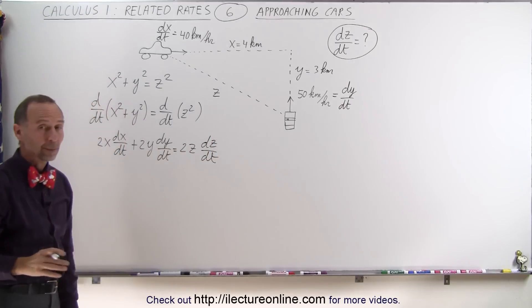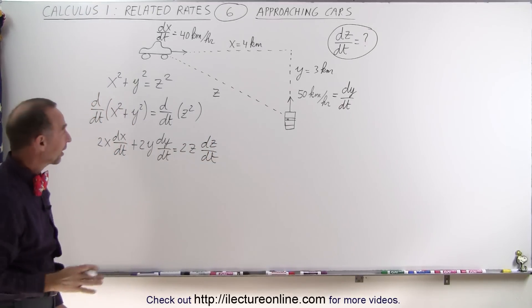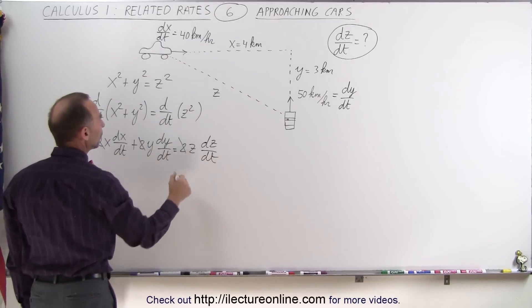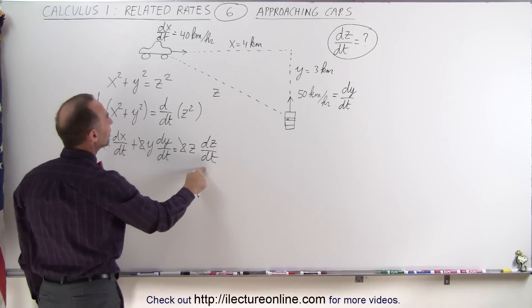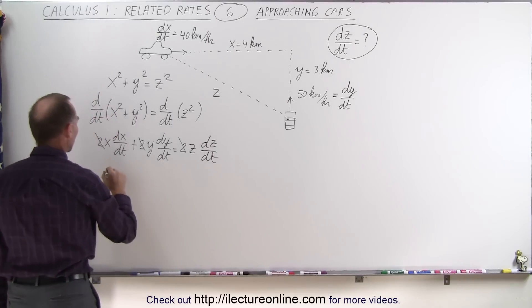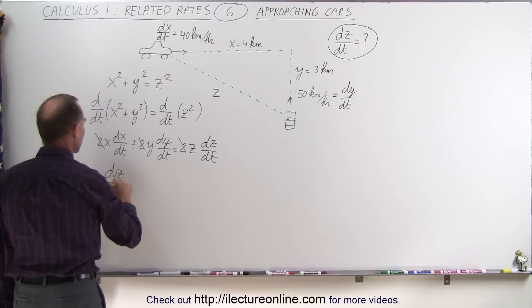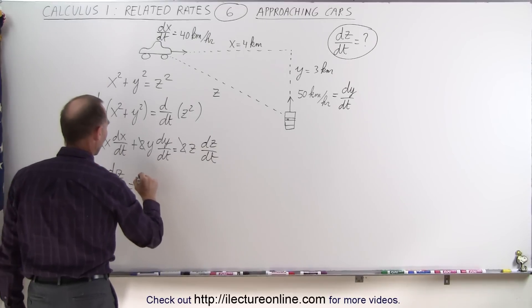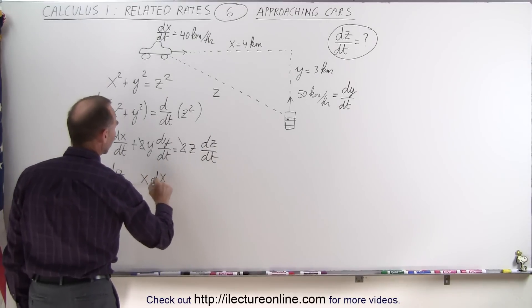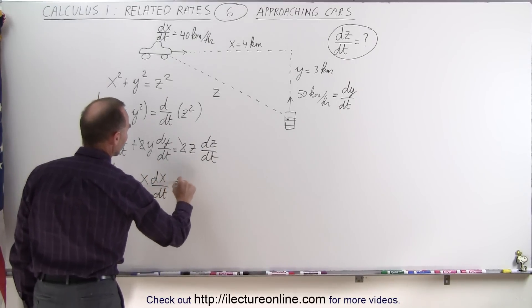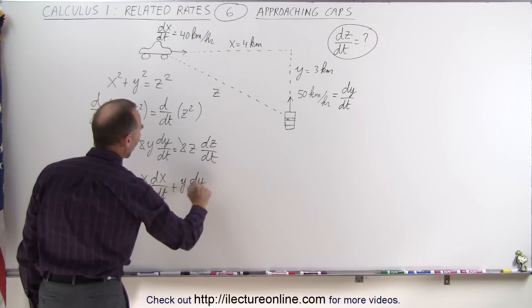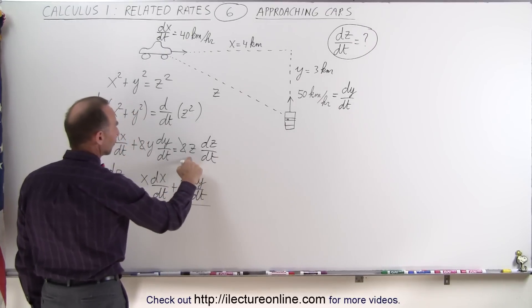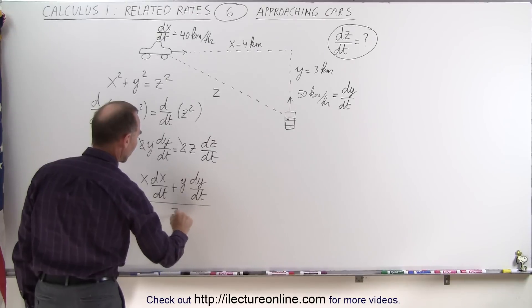We can divide both sides of the equation by 2 to get rid of all the 2's. Then we have to solve this equation for dz/dt, which means dz/dt can be expressed as x times dx/dt plus y times dy/dt, all divided by the coefficient in front of dz/dt, which is z.